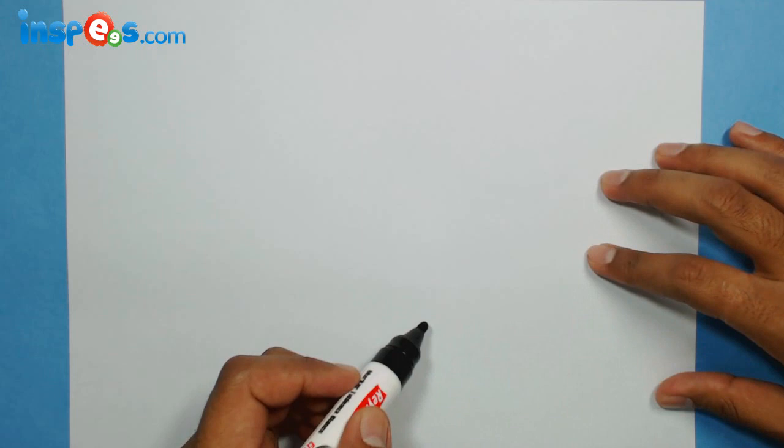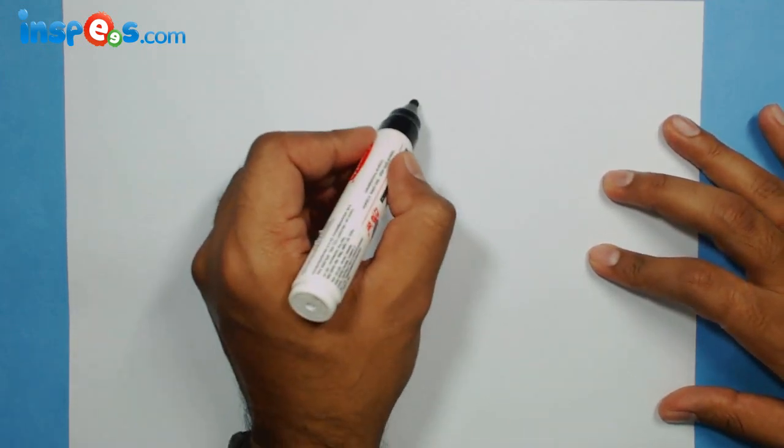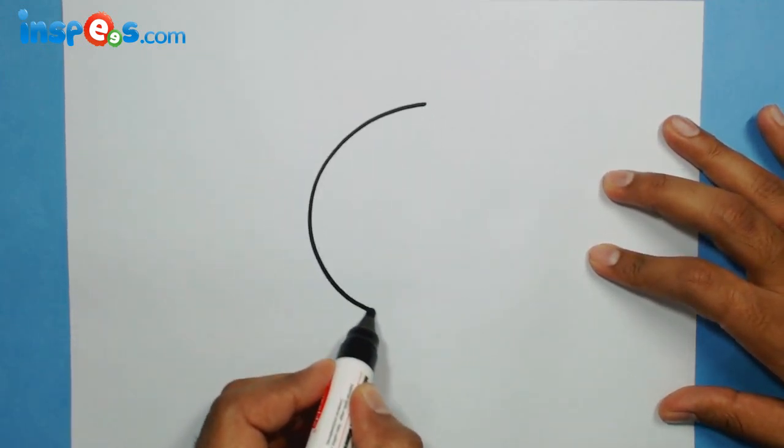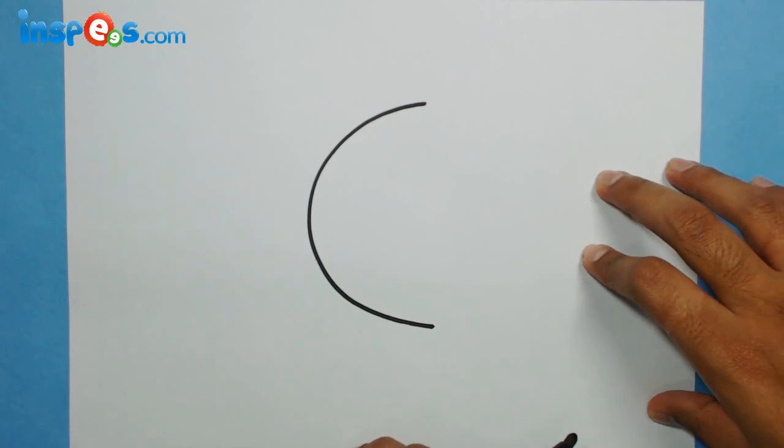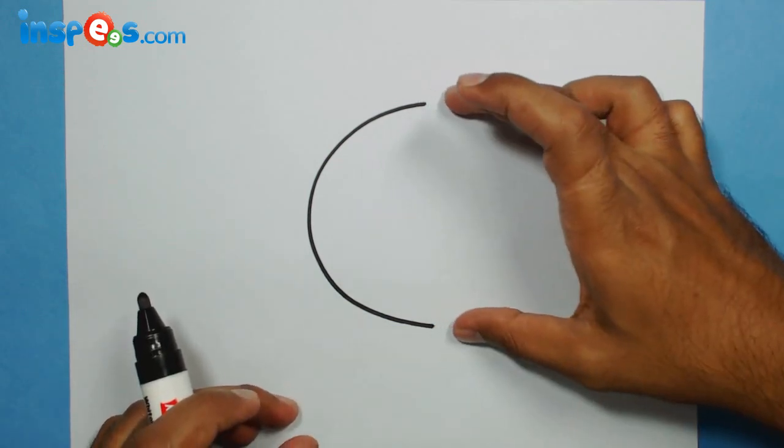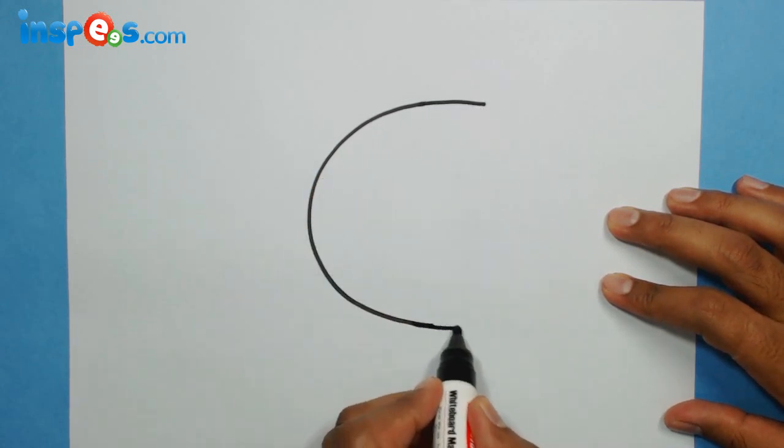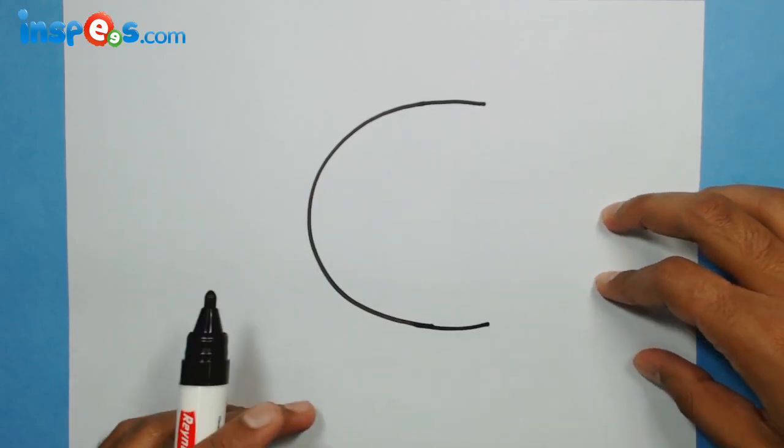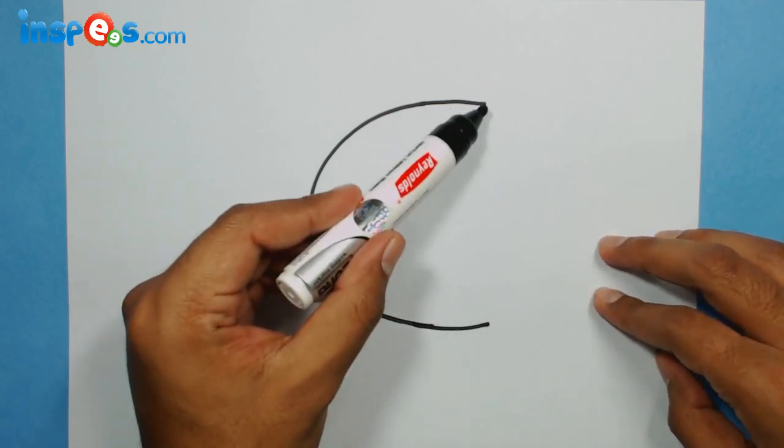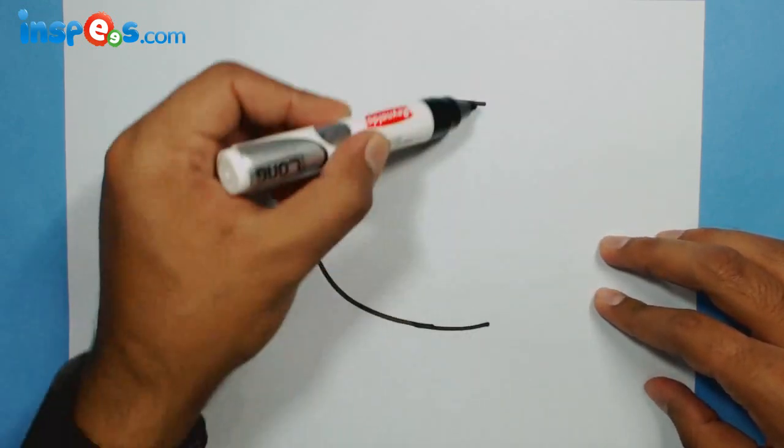So here's a C. Now what I'm going to do is extend these two ends a little bit more, like this. Now connecting this end and this, and I'm going to draw one more curve, a straight curve like this.